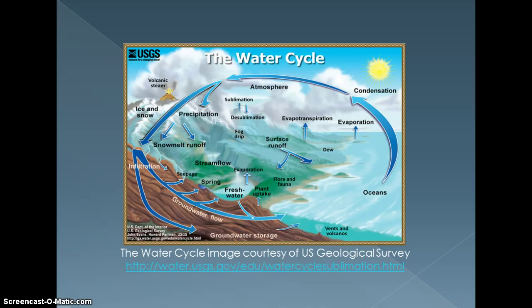Some important processes in the water cycle include evaporation, condensation, and precipitation. Evaporation is water vapor that rises into the air until it cools and condenses and forms water droplets. Condensation is when millions of water droplets come together to form clouds. The clouds get heavy and gravity tugs on the droplets, and the clouds release it as precipitation — for example, snow and rain.